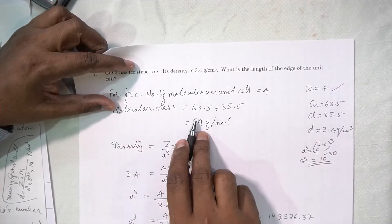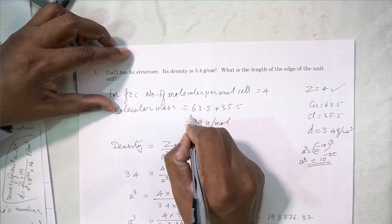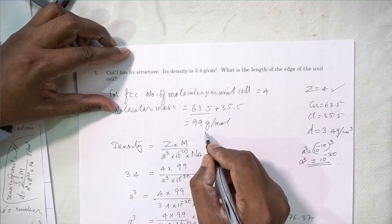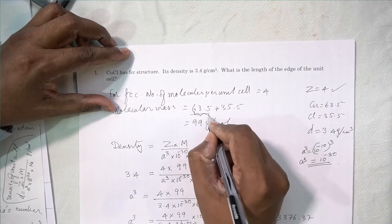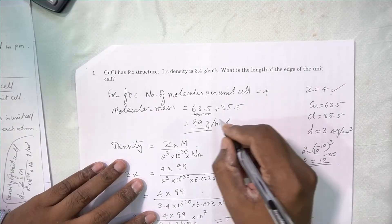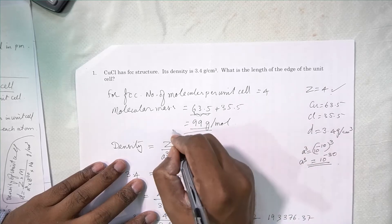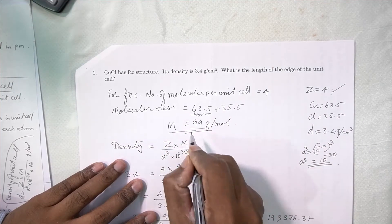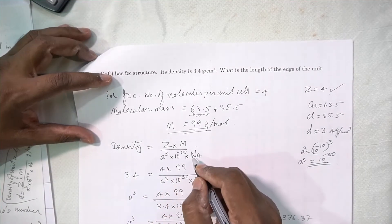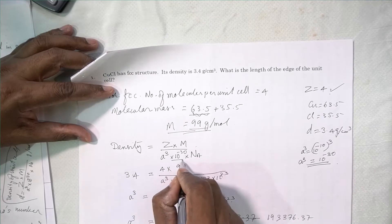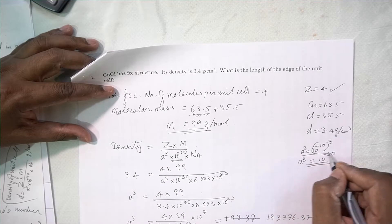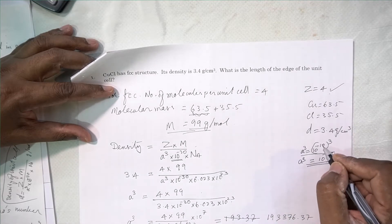The molecular mass of CuCl: atomic weight of Cu is 63.5 plus Cl is 35.5, giving 99. So molecular mass M is equal to 99. Now, density is equal to Z into M upon A cubed into 10 to the power minus 30 into Avogadro's number. The 10 to the power minus 30 appears because A is in picometers — 10 to the power minus 10 meters — and when cubed, it becomes 10 to the power minus 30.